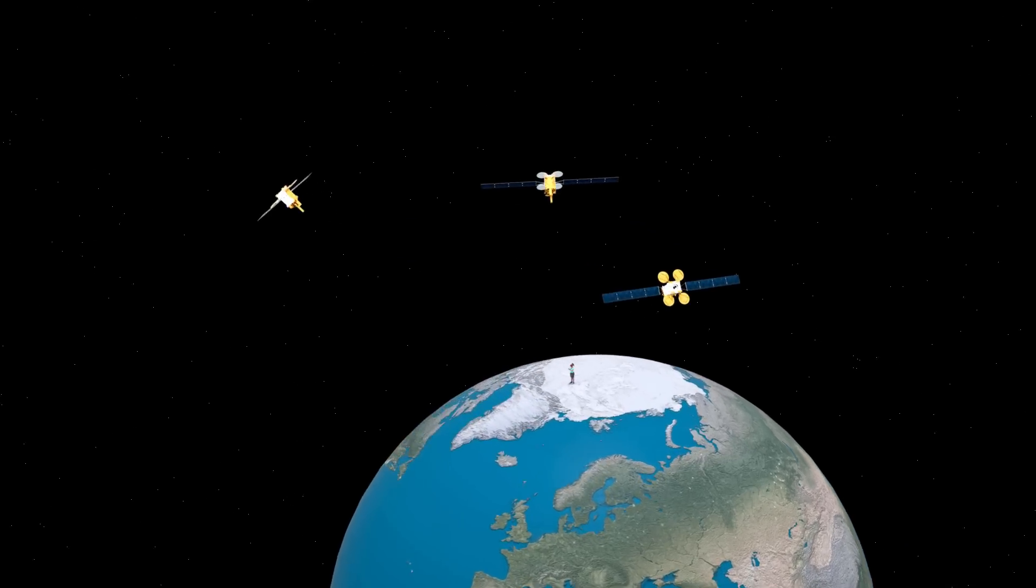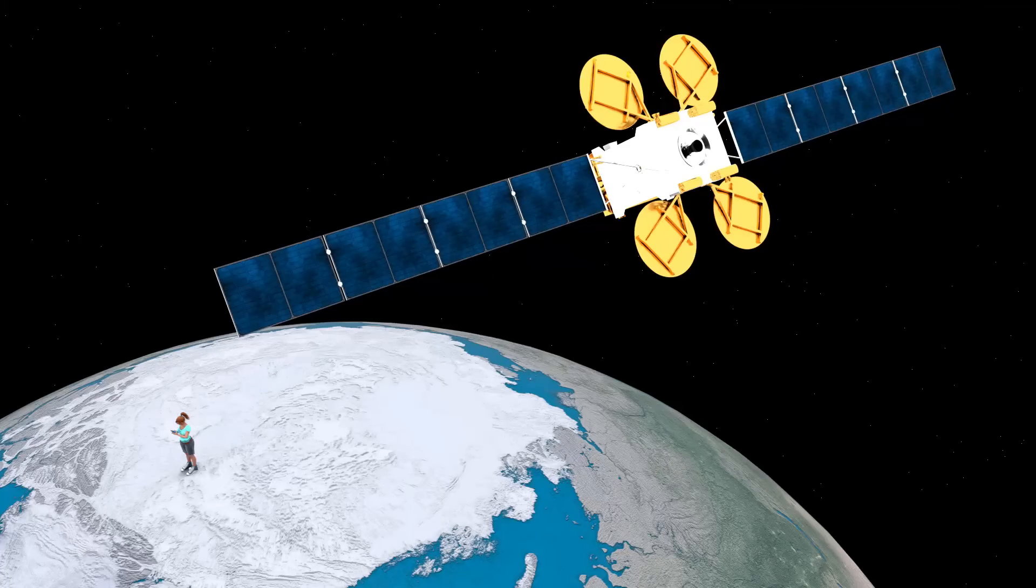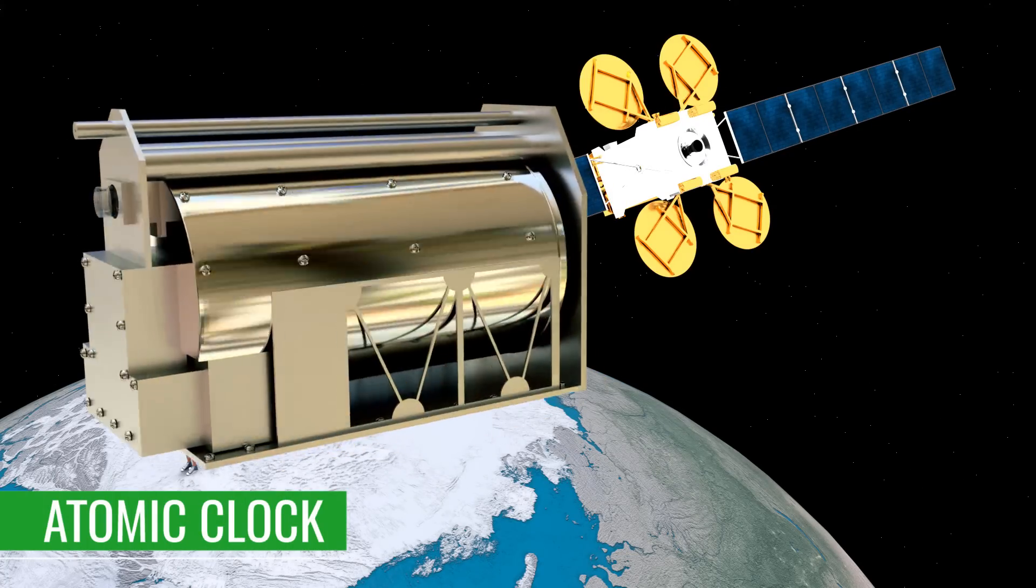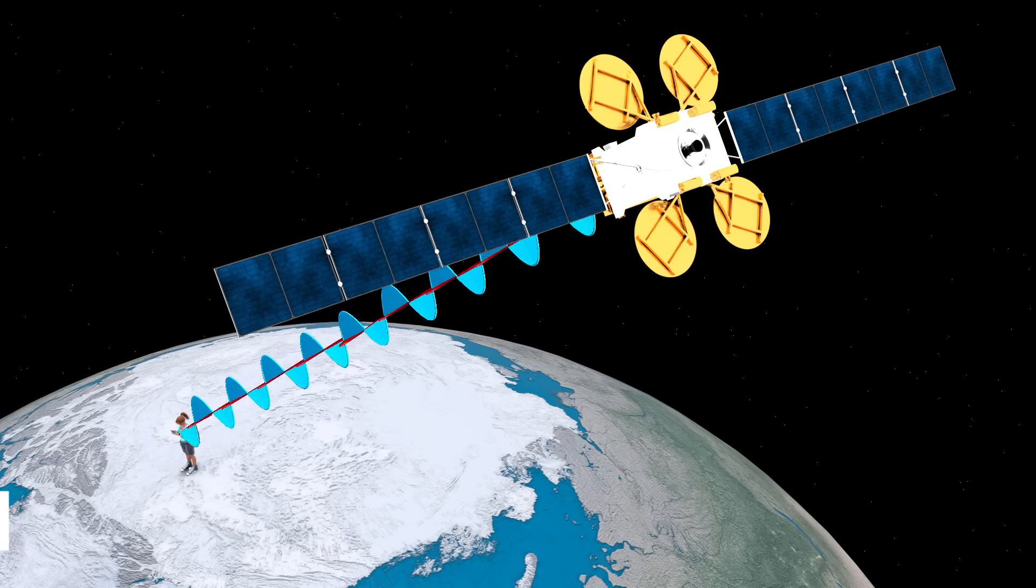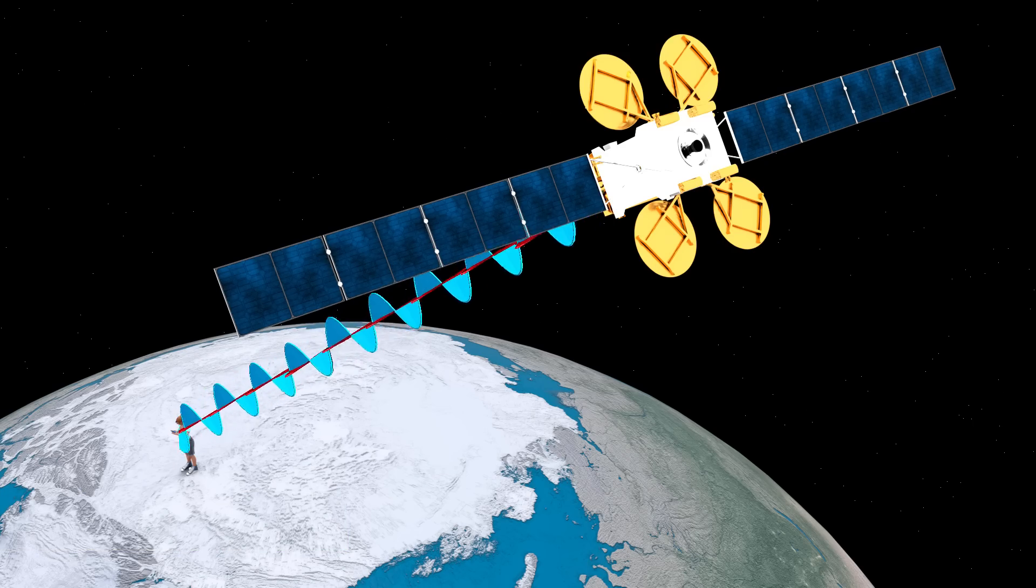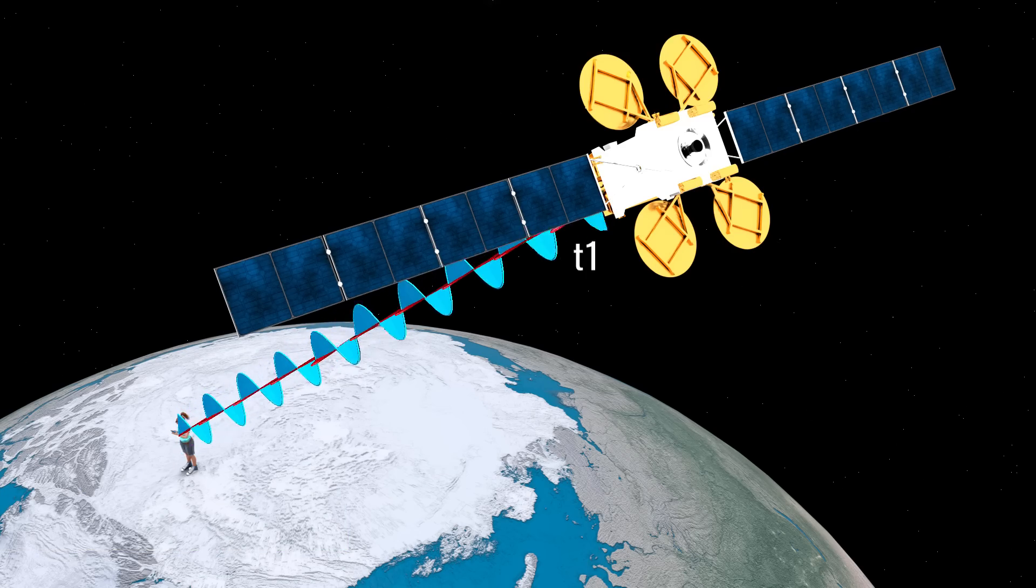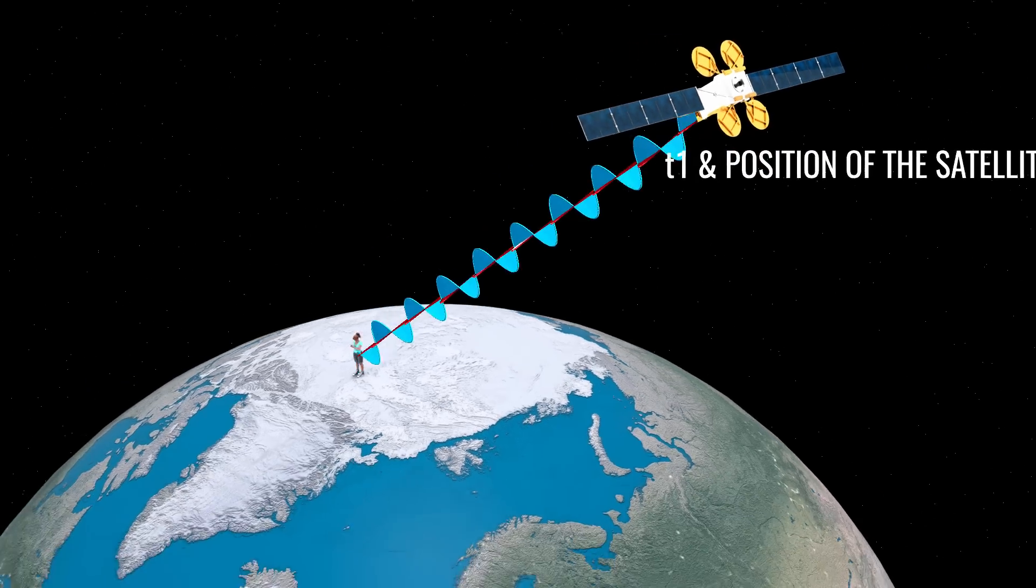Now, let's see how the distance between you and the satellite is measured. All the satellites are equipped with a very accurate atomic clock. The satellite sends an intermittent radio signal down to Earth. This radio signal will contain the exact time the signal was sent and the position of the satellite.